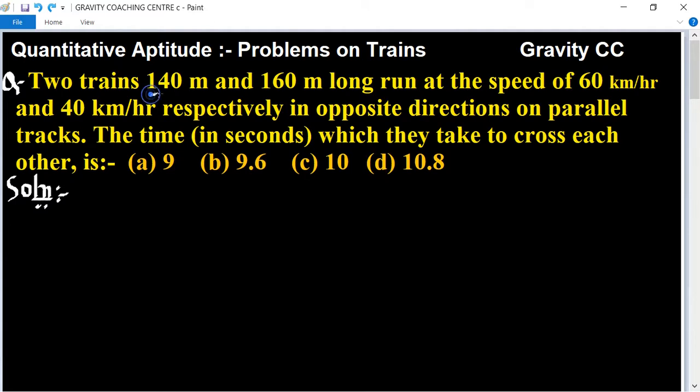In this question, there are two trains with lengths of 140 and 160 meters long and speeds of 60 km per hour and 40 km per hour. How much time to cross each other?